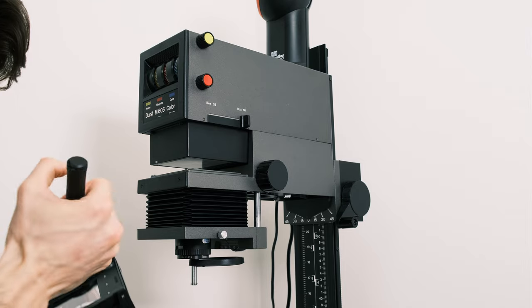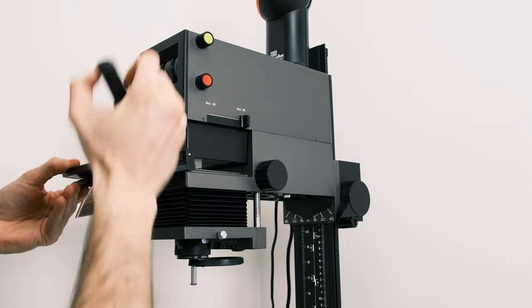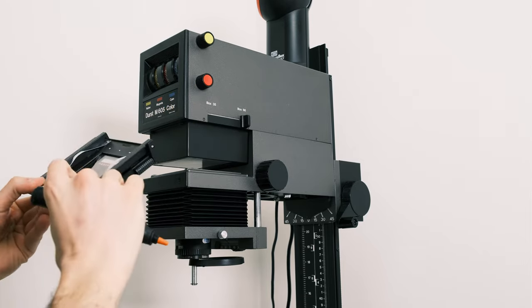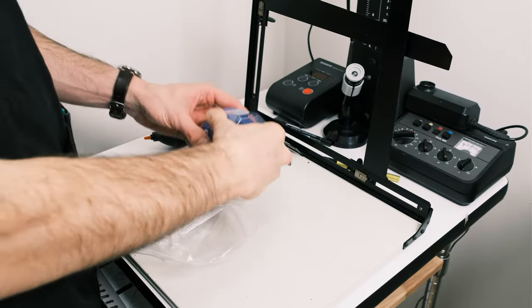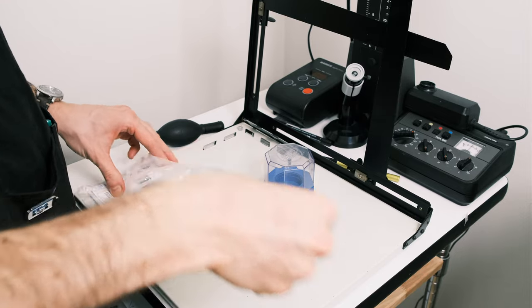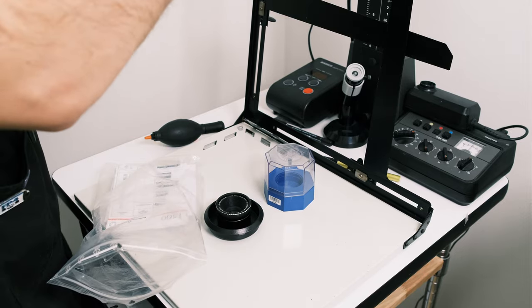Let's load the negative, clean up everything from the dust and start making test prints. But first let's switch the lens from 80mm to 50mm and adjust the easel and size of the prints for required size of the paper.